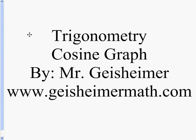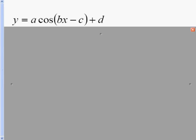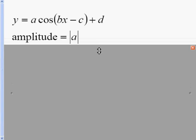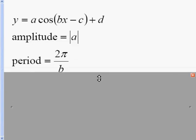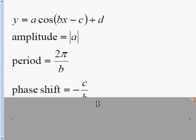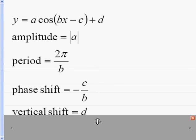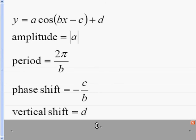The cosine graph. Graphing a cosine graph is very similar to graphing a sine curve. The formula for the cosine is the same as the sine, except it's a cosine: Y equals A cosine of BX minus C, plus D on the outside. The amplitude is the absolute value of A, the period is 2 pi over B, the phase shift is the opposite of the inside divided by B, and the outside value is your vertical shift.